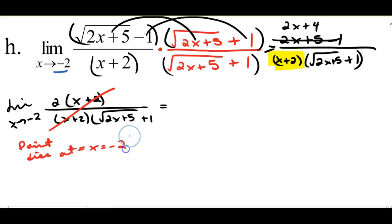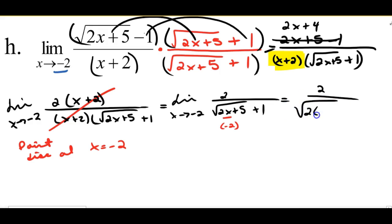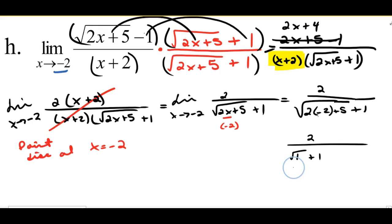I have a removable discontinuity at X equals negative 2, and I'm left with the limit as X approaches negative 2 of 2 over the quantity radical 2X plus 5 plus 1. Now I can directly substitute: 2 over radical (2 times negative 2 plus 5) plus 1. That's 2 over radical(negative 4 plus 5) plus 1, which is radical 1 plus 1, equals 1 plus 1 equals 2. So 2 over 2 equals 1.